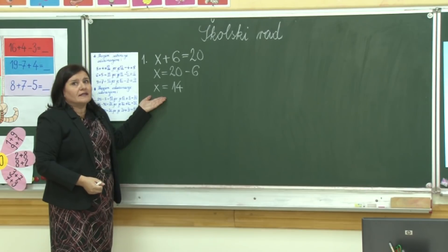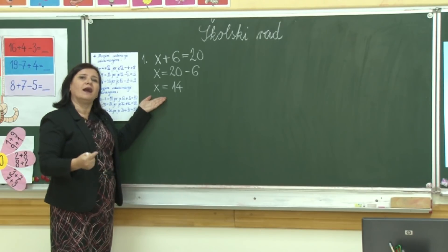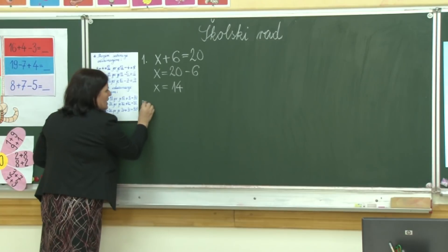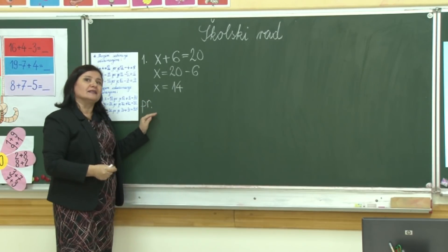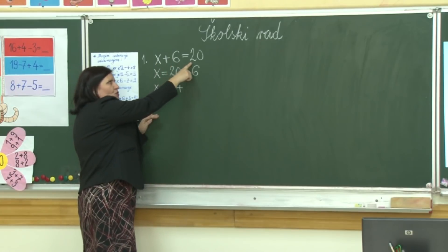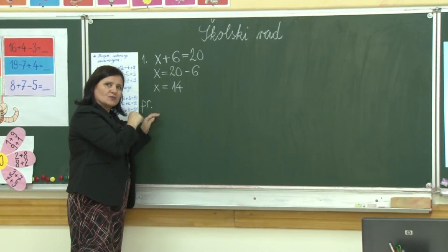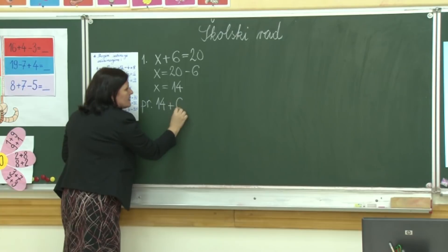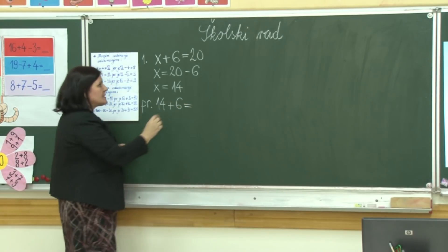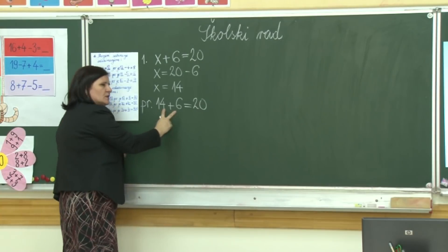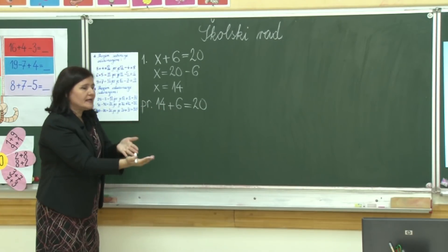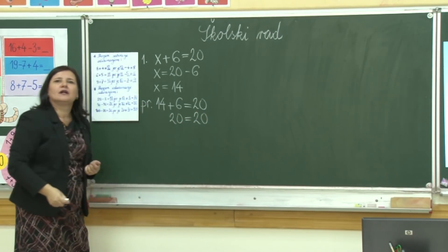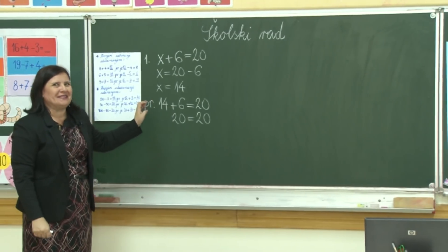Da li smo uradili kako treba, ili nam još nešto nedostaje? Sad treba to da provjerimo. Napisat ćemo provjera. Gledamo početak zadatka onako kako smo ga postavili i pišemo — umjesto x stavljamo broj četrnaest. Četrnaest plus šest je dvadeset. Mora nam biti lijeva strana jednaka desnoj strani. Četrnaest plus šest je dvadeset, a dvadeset je jednako dvadeset.